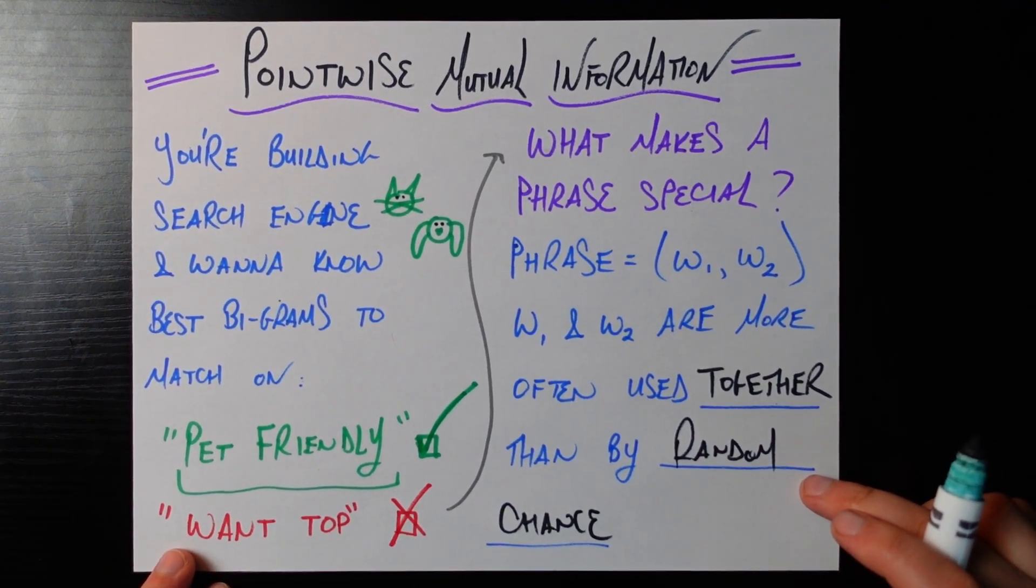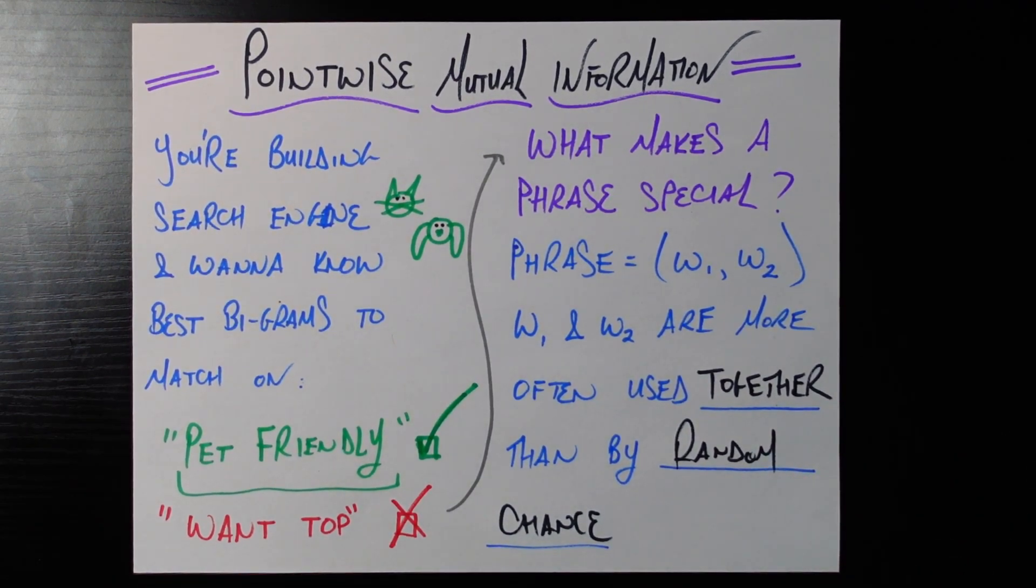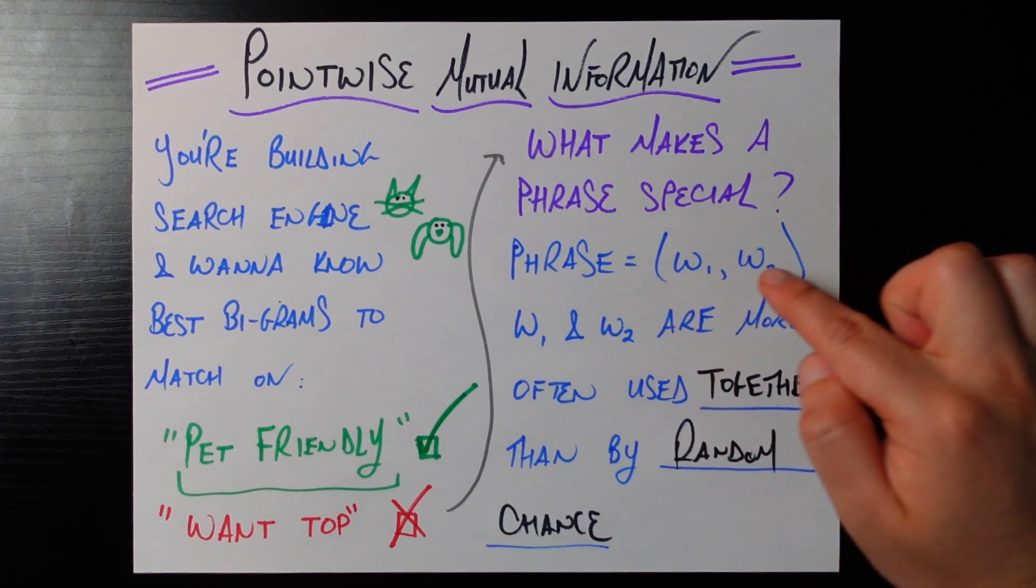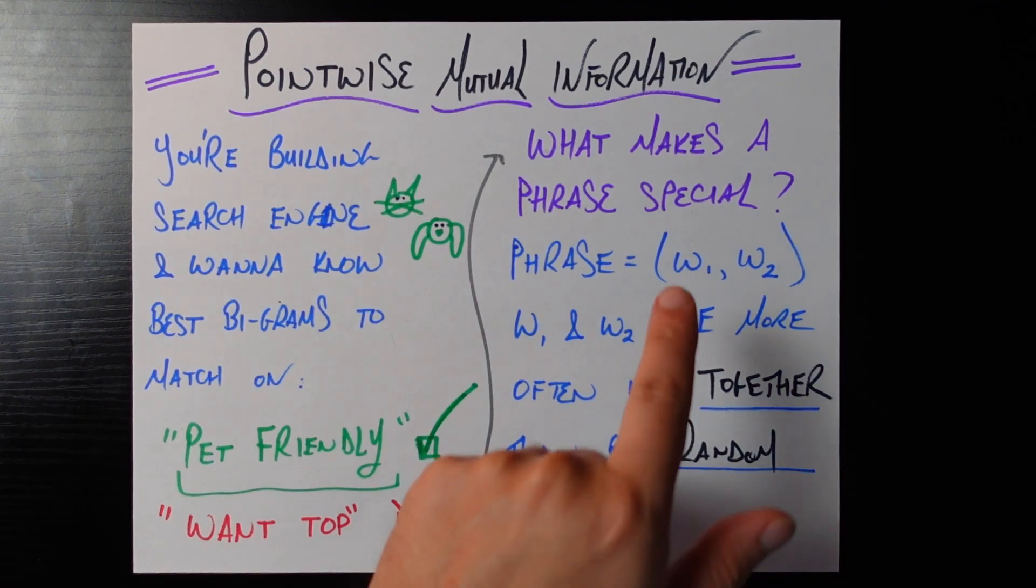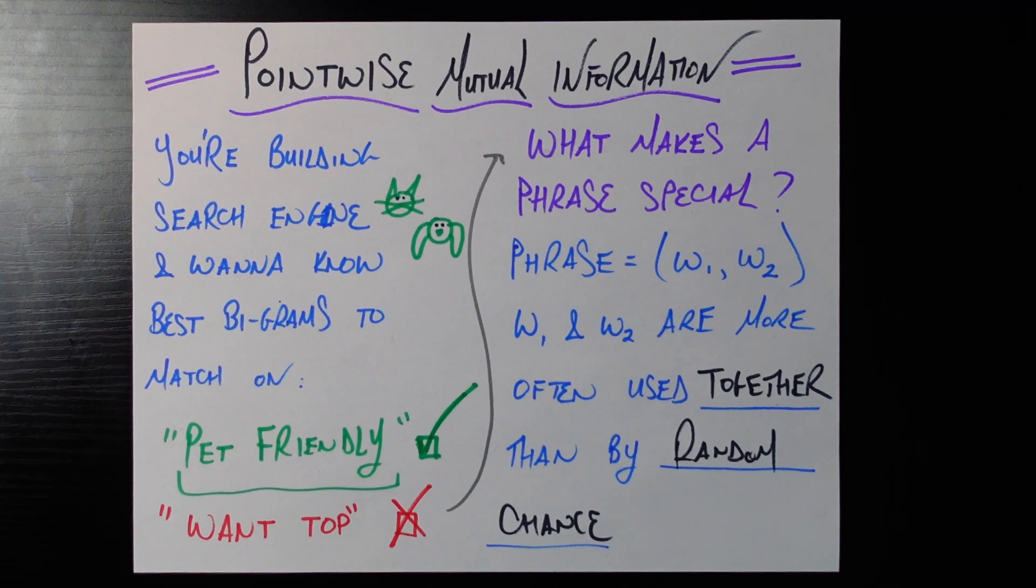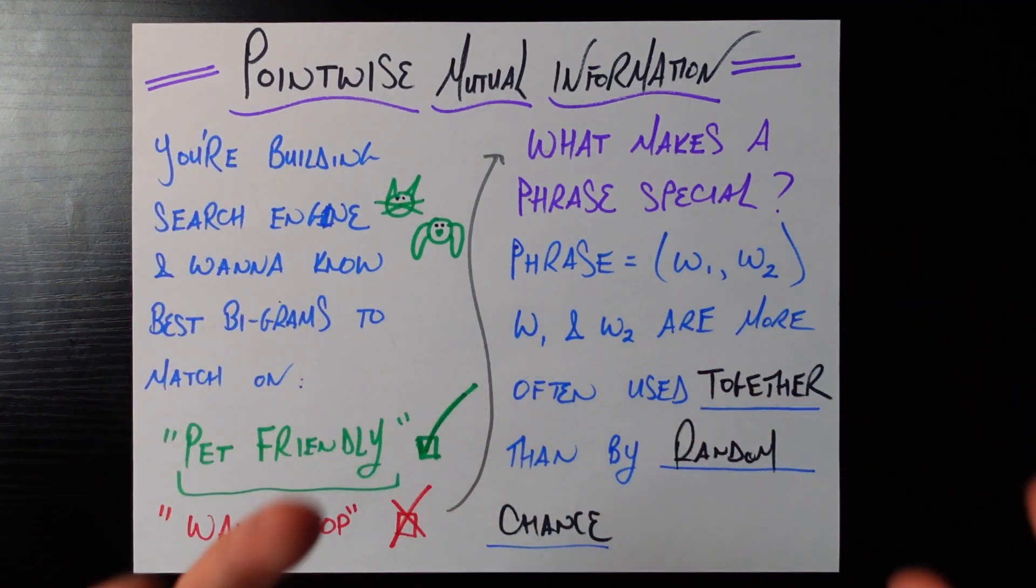So this is the main part of the video. If you understand this all the math is going to be a breeze for you. We consider something a phrase if seeing these two things in this order w1 and then w2 happens much more often in some big body of text than we would expect it to by random chance alone. Under the hypothesis that w1 and w2 have nothing to do with each other and anytime we do see them together it's just purely based on random chance not because there's actually some force that is making them show up together more often than not.